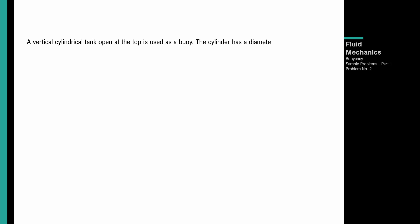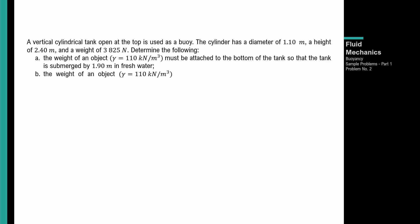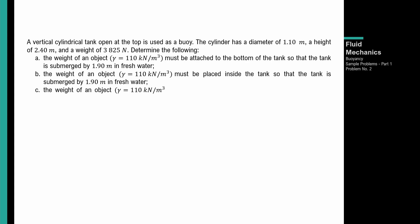Problem number 2: a vertical cylindrical tank, open at the top, is used as a buoy. The cylinder has a diameter of 1.10 meters, a height of 2.4 meters, and a weight of 3825 newtons. Determine the weight of an object, with unit weight of 110 kilonewtons per cubic meter, that must be attached to the bottom of the tank so that the tank is submerged by 1.9 meters in fresh water. Next scenario: the same object but placed inside the tank, also submerged 1.9 meters.